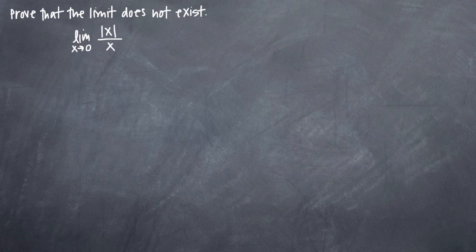The definition of a limit says that a limit exists if the left-hand limit exists, the right-hand limit exists, and the two — the left and right-hand limits — are equal to one another. So if we're going to prove that the limit does not exist, we either have to prove that the left-hand limit does not exist, and/or that the right-hand limit does not exist, and/or that the two are not equal to each other.